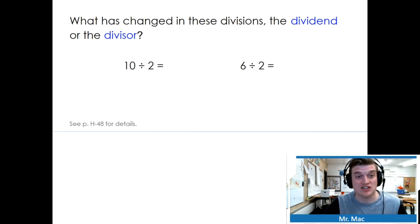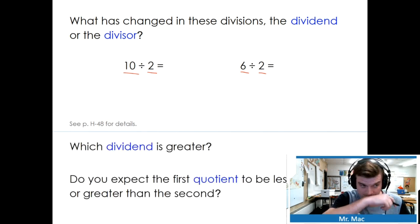What has changed in these divisions? The dividend or the divisor? Remember, dividend is our total. What has changed? Well, the 2 stayed the same. That's our divisor. So our dividend has changed. Which dividend is greater? 10 or 6? Hopefully it's obviously 10.